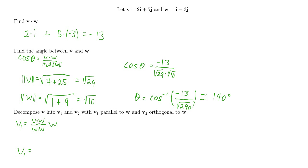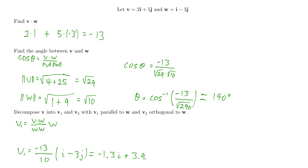Let's compute v1. We already have v dot w, which is negative 13. w dot w is the magnitude of w squared — that's the square root of 10 squared, which is 10. So v1 equals negative 13 over 10 times the vector w, which is i minus 3j. Working that out: negative 13 over 10 is negative 1.3, so that times i gives negative 1.3i, and negative 1.3 times negative 3 gives positive 3.9j. So v1 equals negative 1.3i plus 3.9j.